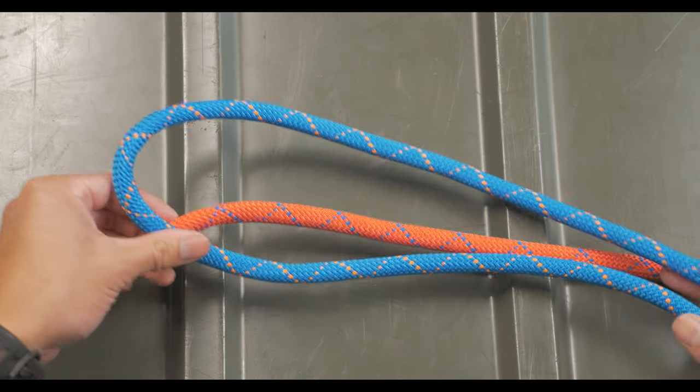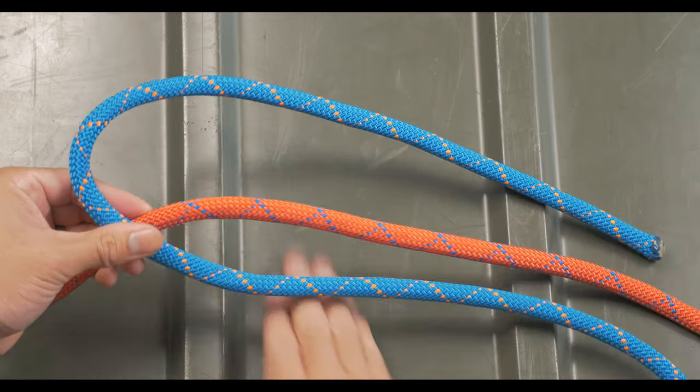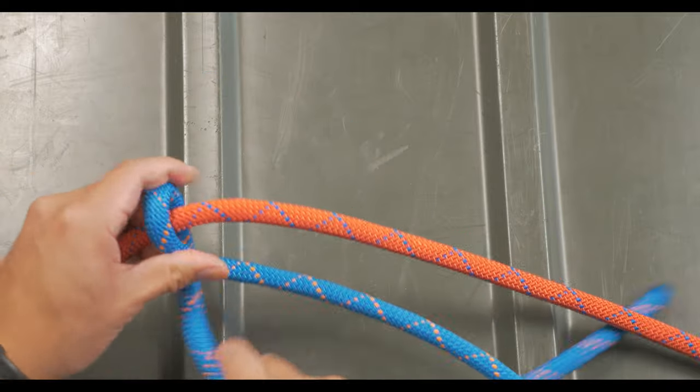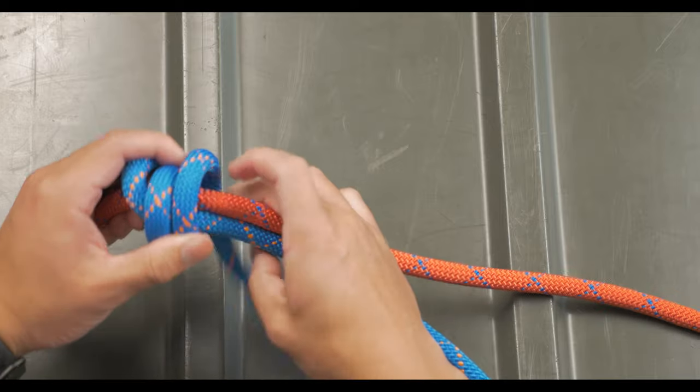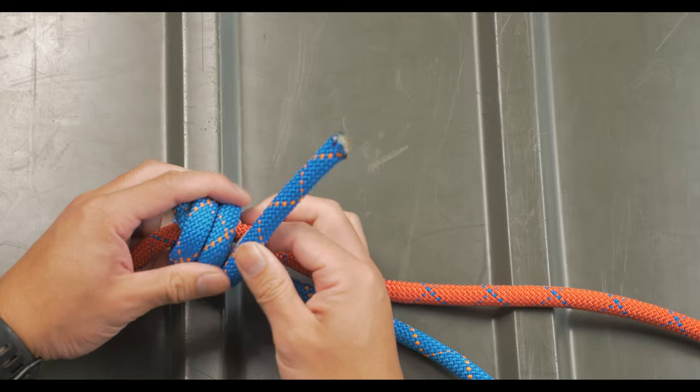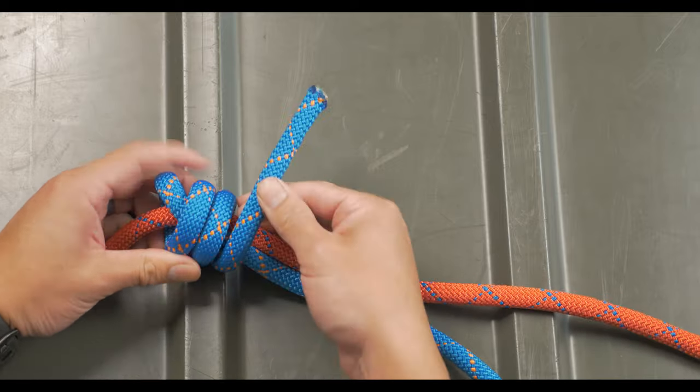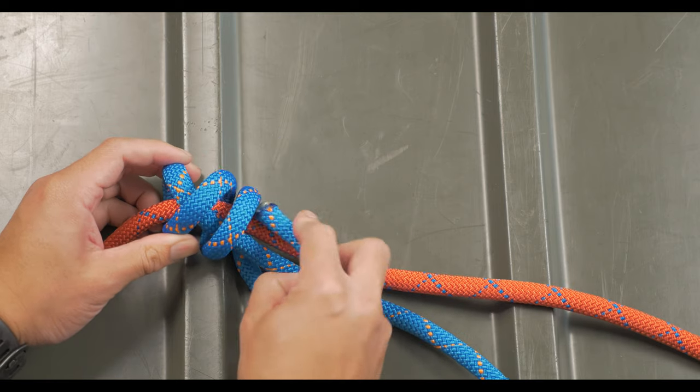You'll start in very much the same way as a blood knot. With the working ends overlapping and pointing in opposite directions, you'll do three wraps around itself and the other line. But instead of tucking the working end between the two lines, you're going to weave it inside of the coil.